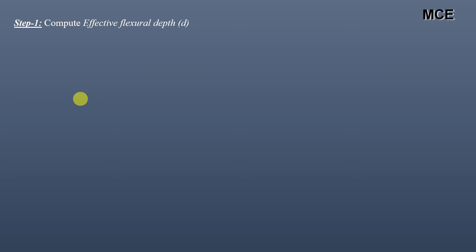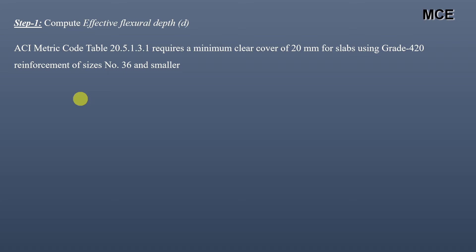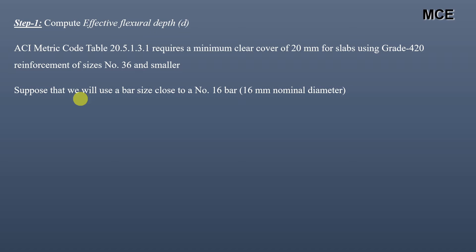The first step in designing the slab is to find the effective flexural depth. The ACI metric code requires a minimum clear cover of 20 mm for slabs using grade 420 reinforcement of sizes number 36 and smaller. Assuming a bar size of number 16 with a 16 mm nominal diameter, the effective depth is: d = total depth − clear cover − half bar diameter = 160 − 20 − 16/2 = 132 mm.